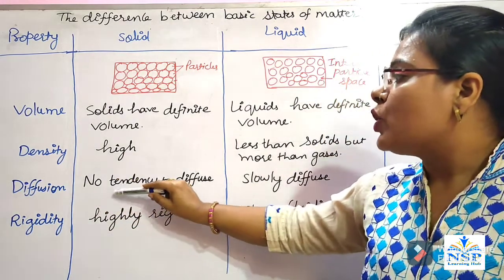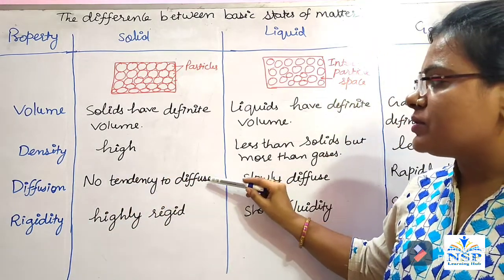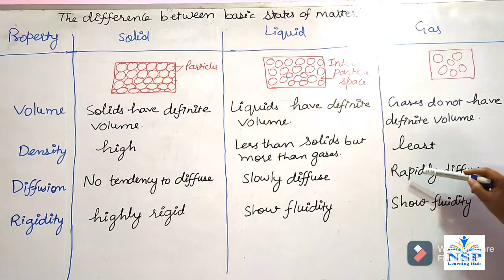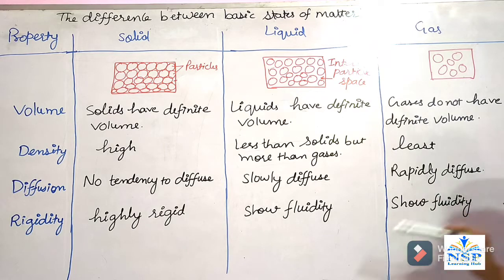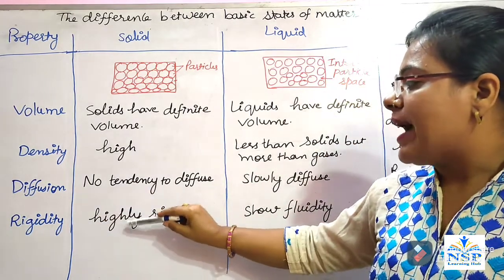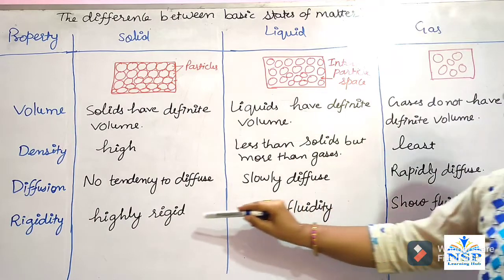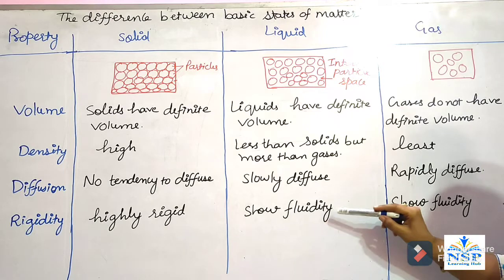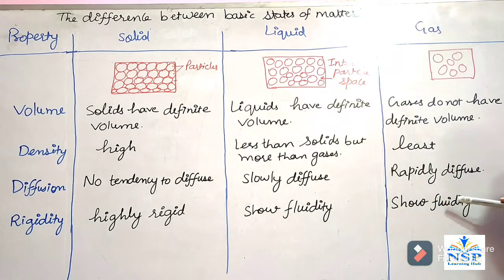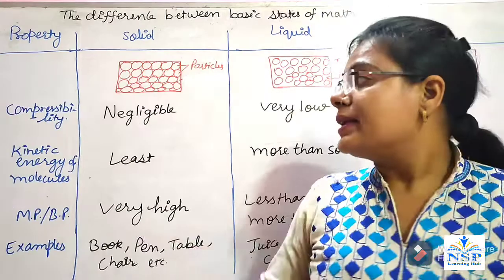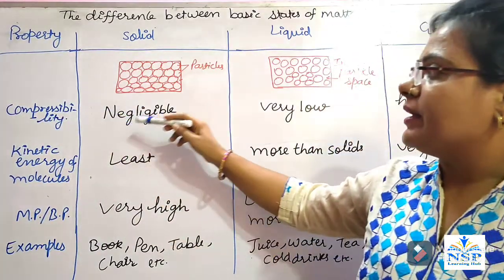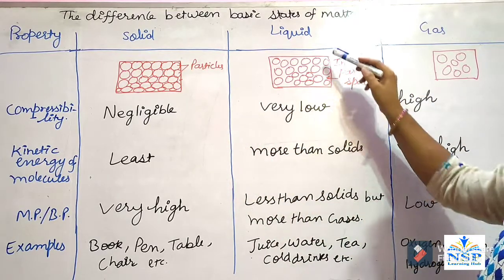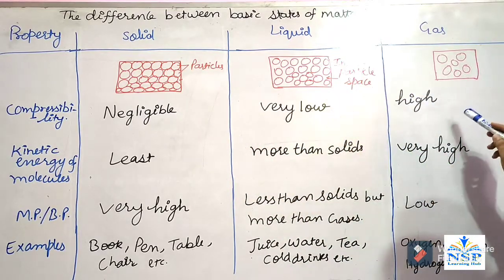Density: solids have high density, liquids less than solids but more than gases, and in gases density is least. Diffusion: solids have no tendency to diffuse, liquids slowly diffuse, and gases rapidly diffuse. Rigidity: solids are highly rigid because of close packing of particles. Liquids and gases show fluidity. Compressibility: negligible in solids, very low in liquids, and very high in gases.